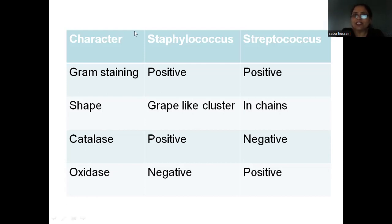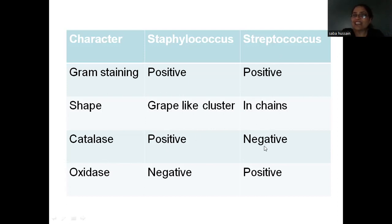If you want to differentiate between genus Staphylococcus and genus Streptococcus, the catalase test is a good test. Staphylococcus always gives a positive catalase test while Streptococcus genus gives a negative catalase test. So if you want to differentiate very fast whether it is a Streptococcus genus or a Staphylococcus, you can go for a catalase test. Coming to oxidase test: Staphylococcus gives a negative oxidase test while Streptococcus gives a positive oxidase test. These two tests are very good to differentiate between the two genera.